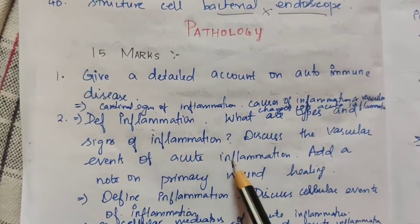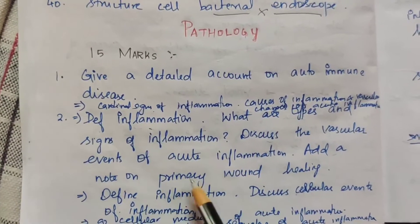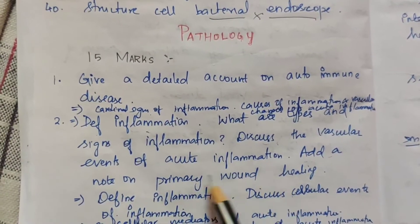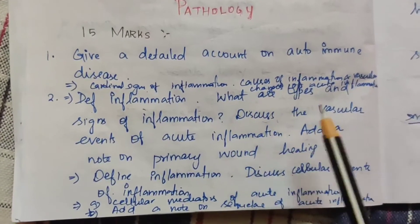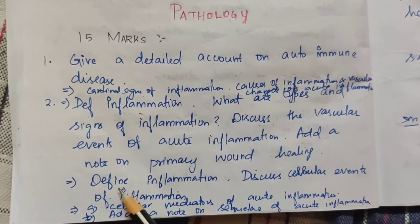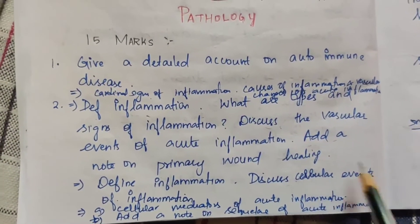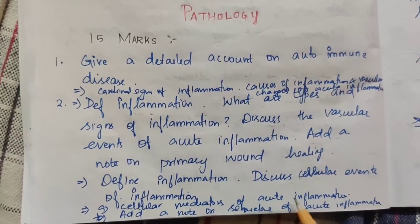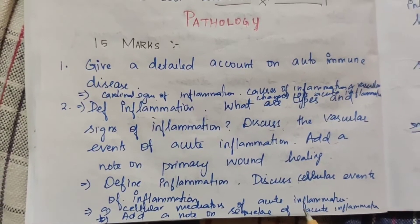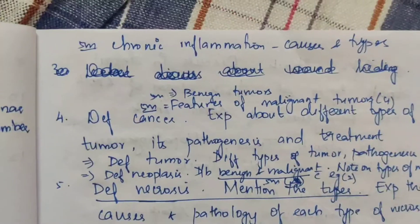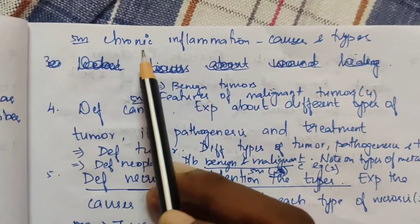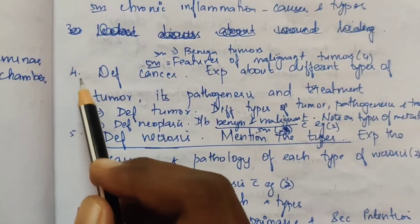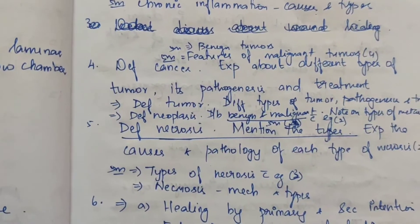Discuss the vascular events of acute inflammation. Add a note on primary wound healing — this is an extra question. Define inflammation, discuss cellular events of inflammation. Add a note on sequel of acute inflammation. For 5 marks, chronic inflammation — its causes and types — is important.